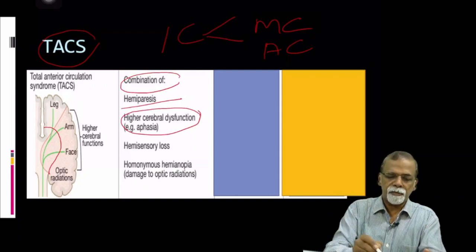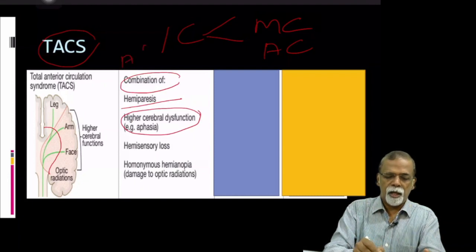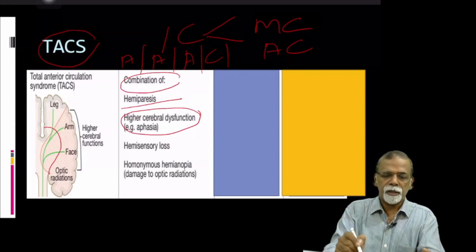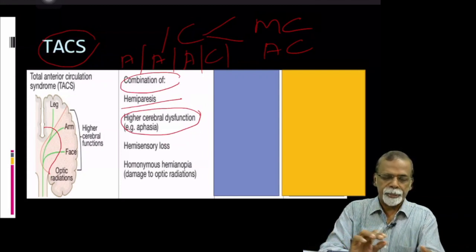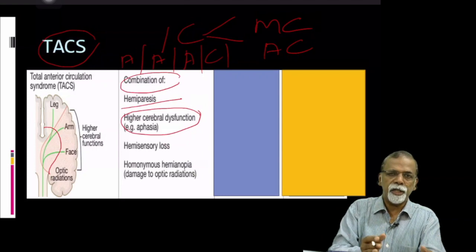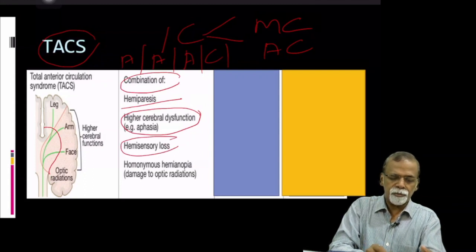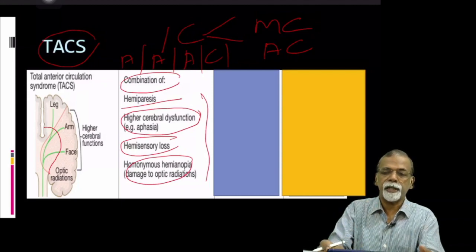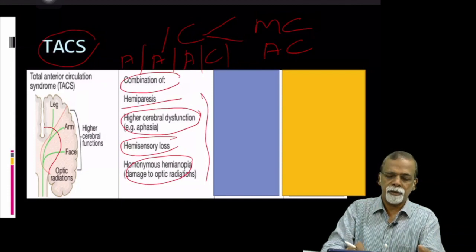So what will happen? There will be a combination of hemiparesis and cerebral dysfunction — that is definite evidence of cortical dysfunction. The typical findings are aphasia, apraxia, agnosia, cortical sensory loss, and visual field defects. These are characteristic of cortical involvement, and if present it suggests total anterior circulation stroke — involvement of one side of the body plus evidence of cortical dysfunction.